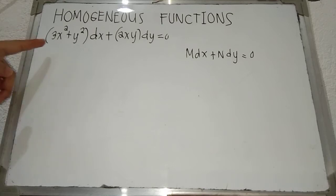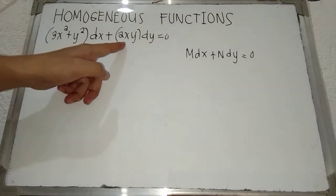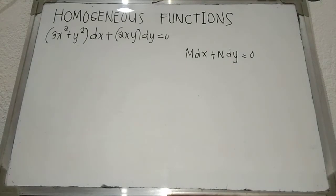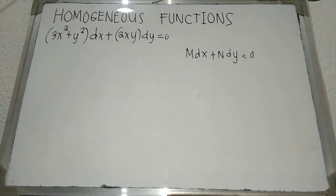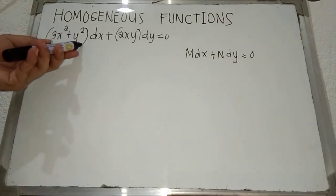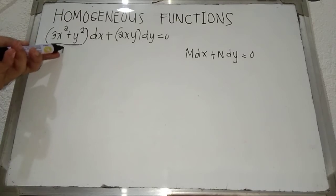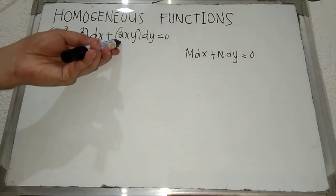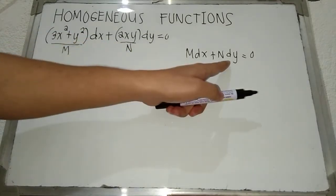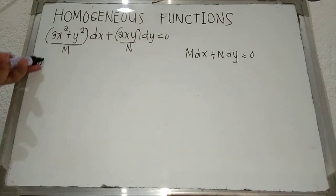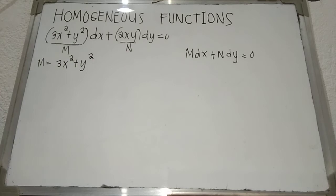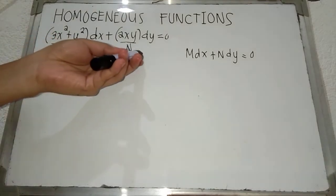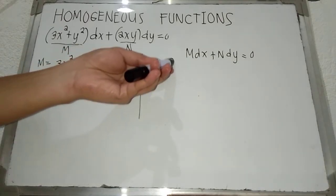Let us have an example: the quantity of 3x² plus y² dx plus the quantity of 2xy dy equals 0. The first thing to do is to determine our M function and our N function. Take note that our M function is beside dx and our N function is beside dy. So our M is equal to 3x² plus y², and our N is equal to 2xy.